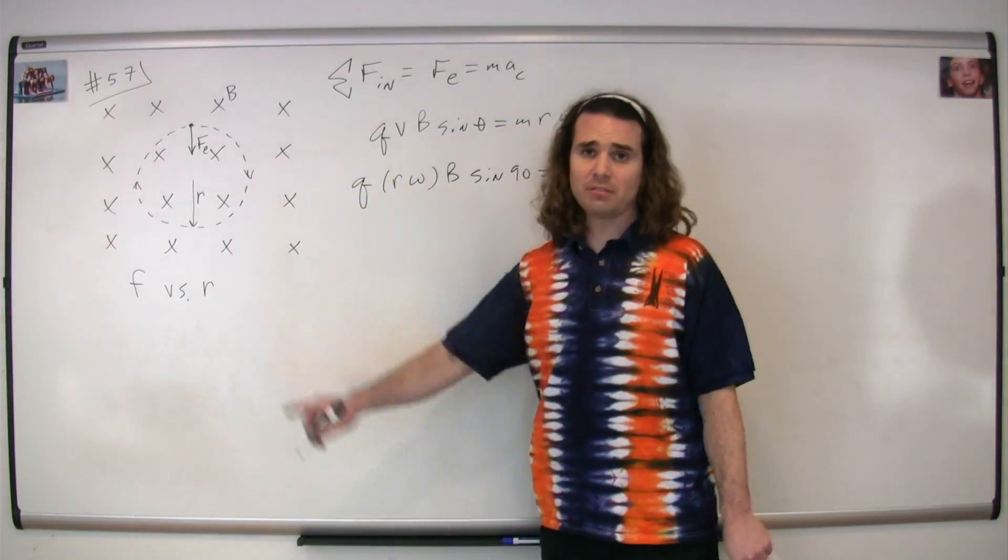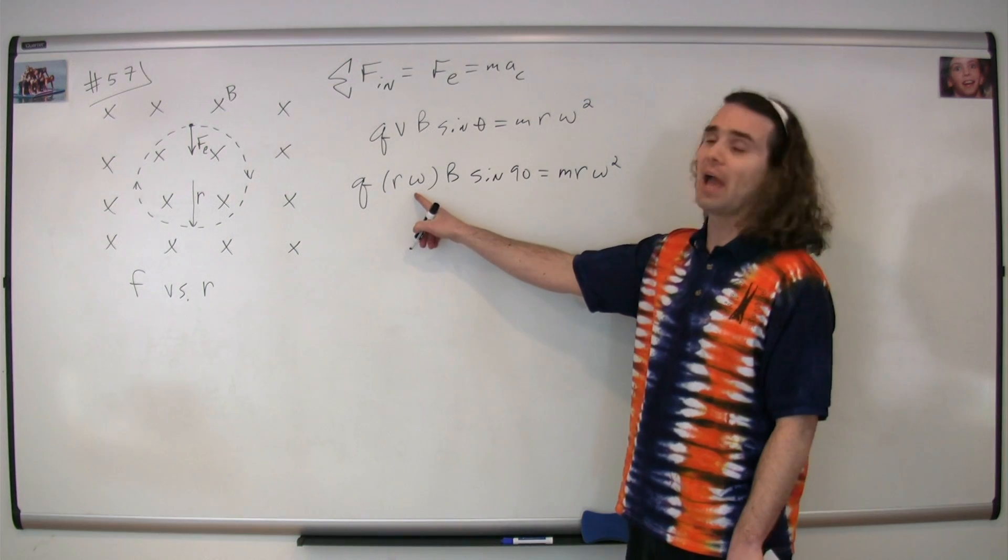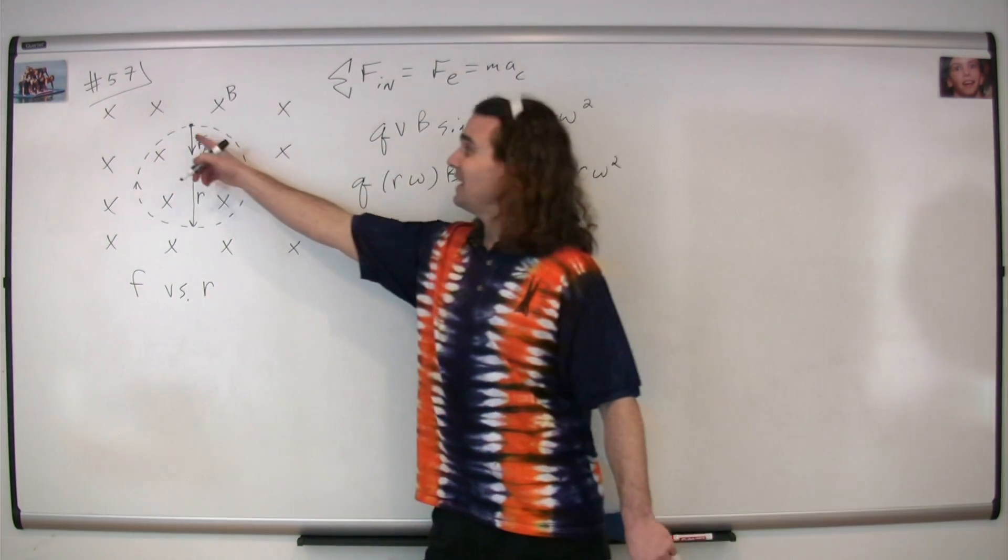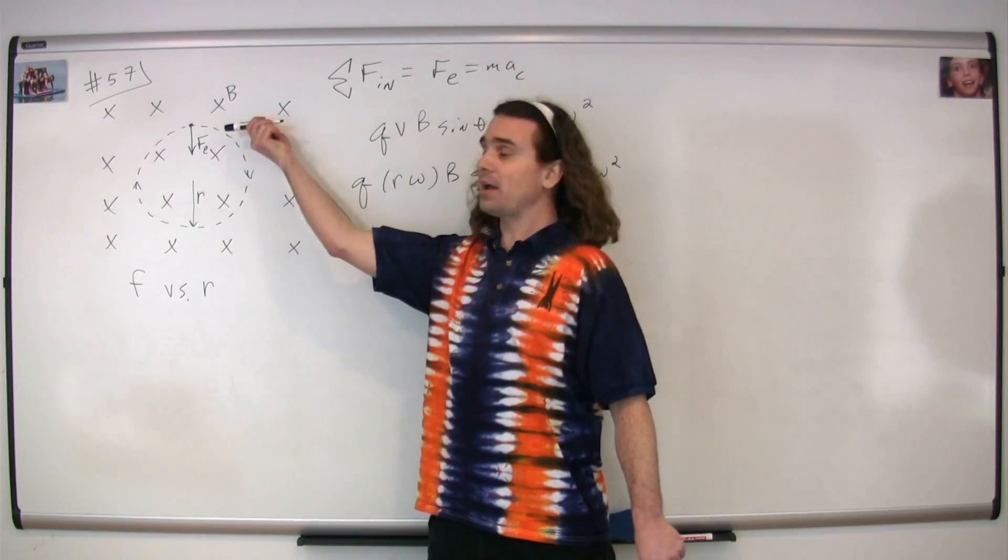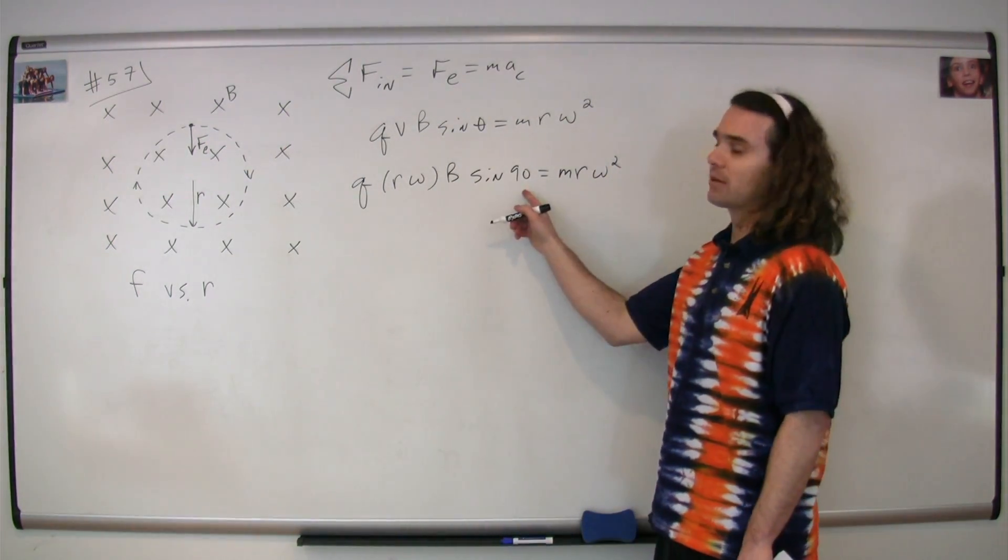This velocity is a tangential velocity, so we can substitute in the equation for the tangential velocity, which is the radius times the angular velocity. And the angle between the velocity and the magnetic field—the velocity is to your right, the magnetic field is out of the board—so the angle between those two is 90 degrees.